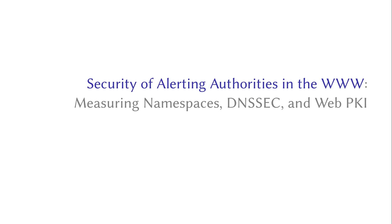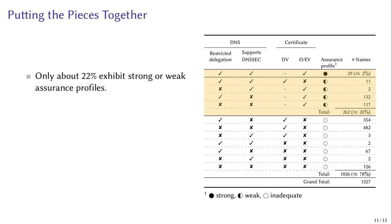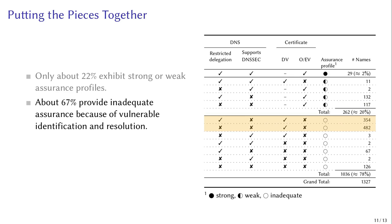We can now use our threat model to merge the previous results into one holistic picture and qualify the security of alerting authorities in terms of assurance profiles. Only 2% provide a strong assurance profile, 20% provide weak assurance profiles, and the remaining 78% provide inadequate assurance. The main reason for inadequate assurance profiles is the lack of DNSSEC combined with DV certificates, and as mentioned, 15% either provide invalid or no certificates at all.